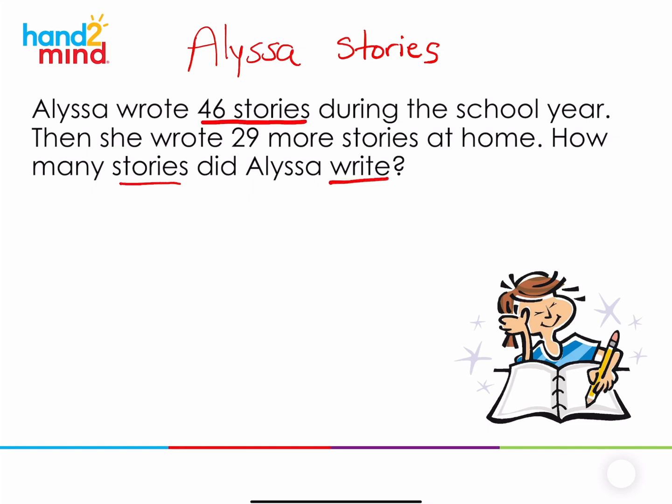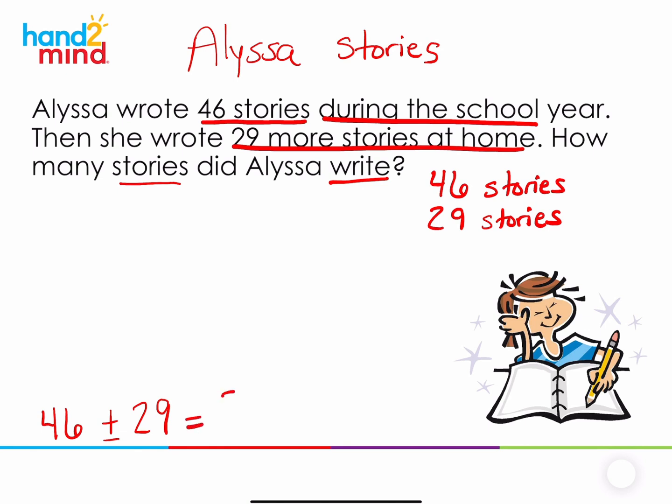Well, we know that she wrote 46 stories during the school year. So she wrote 46 stories during the school year. And she wrote 29 more stories while at home. So 29 more stories while at home. So if I was going to write an equation to represent this problem, what might that look like? What are we going to start with? So we can write an equation that started with 46 and then what happened? Well, she read 29 more. That means it's joining, which is addition. And we're looking for how many stories she read in all, right?